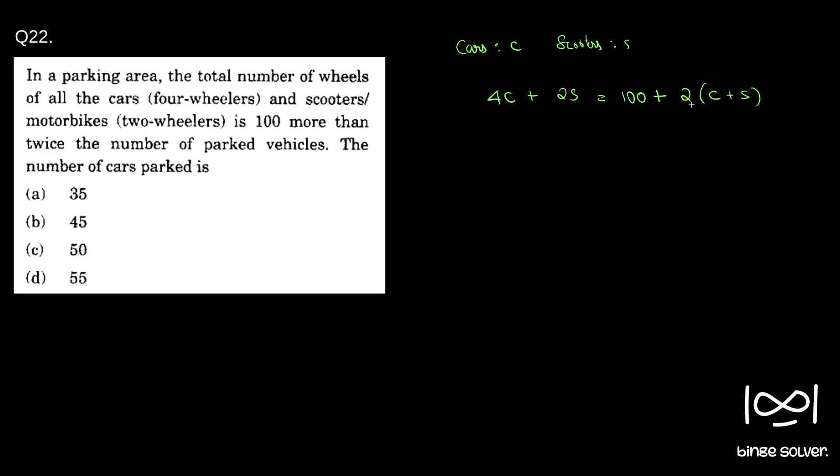That times 2 plus 100 gives 4c + 2s. This is the equation. So if you see, 2s cancels on both sides and we get 4c minus 2c. So 4c equals 100 plus 2c, or...